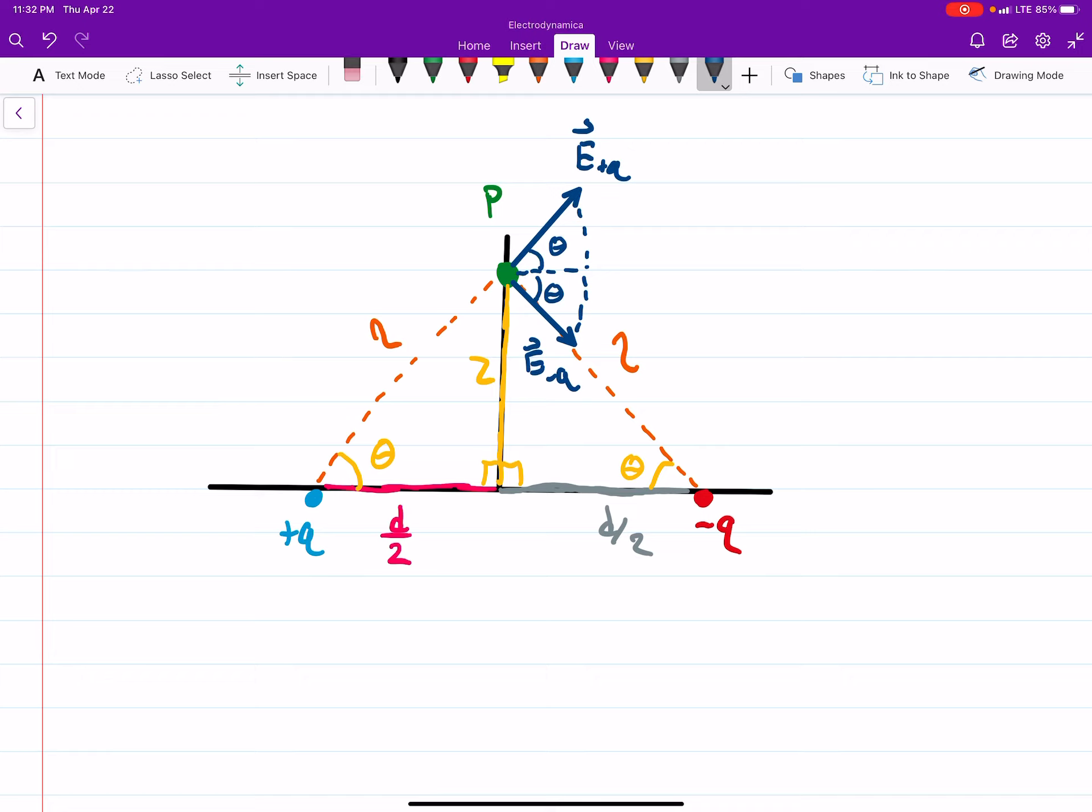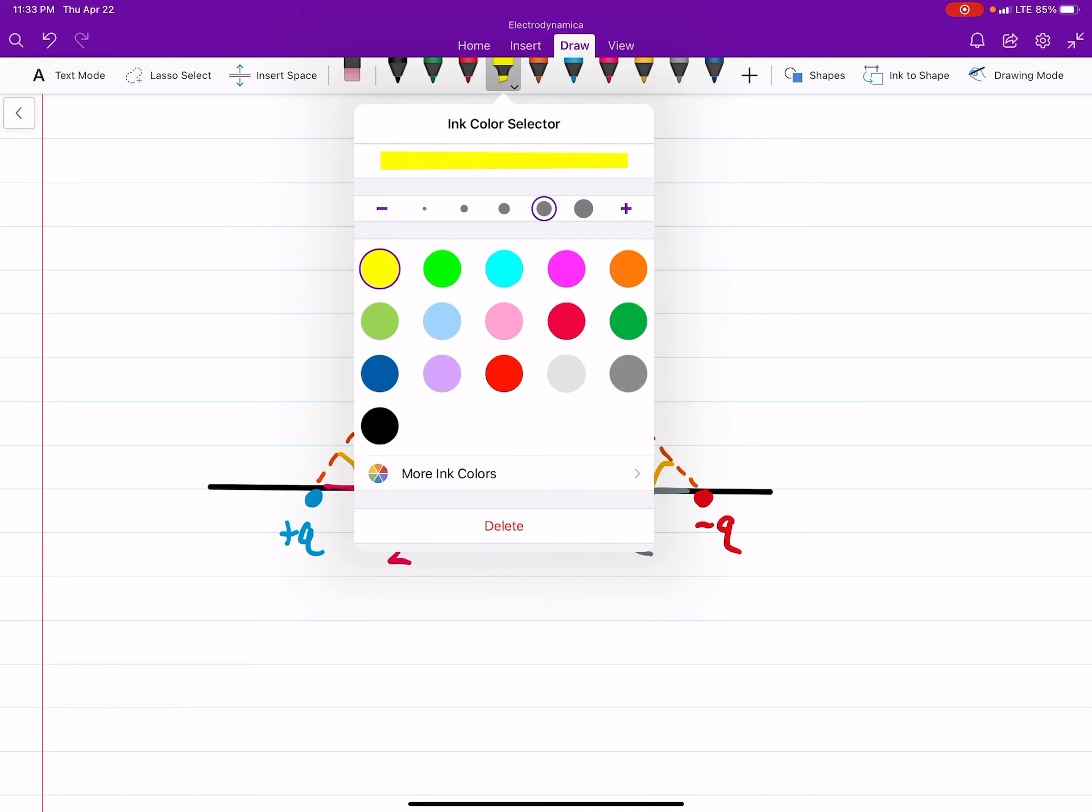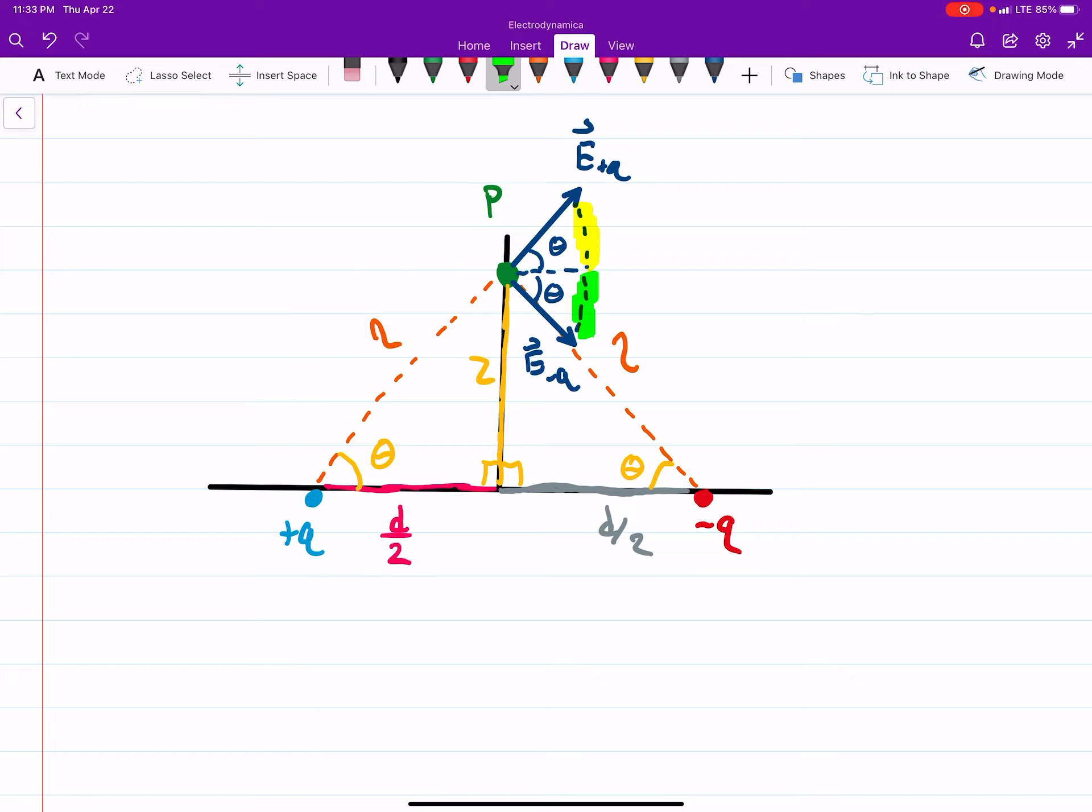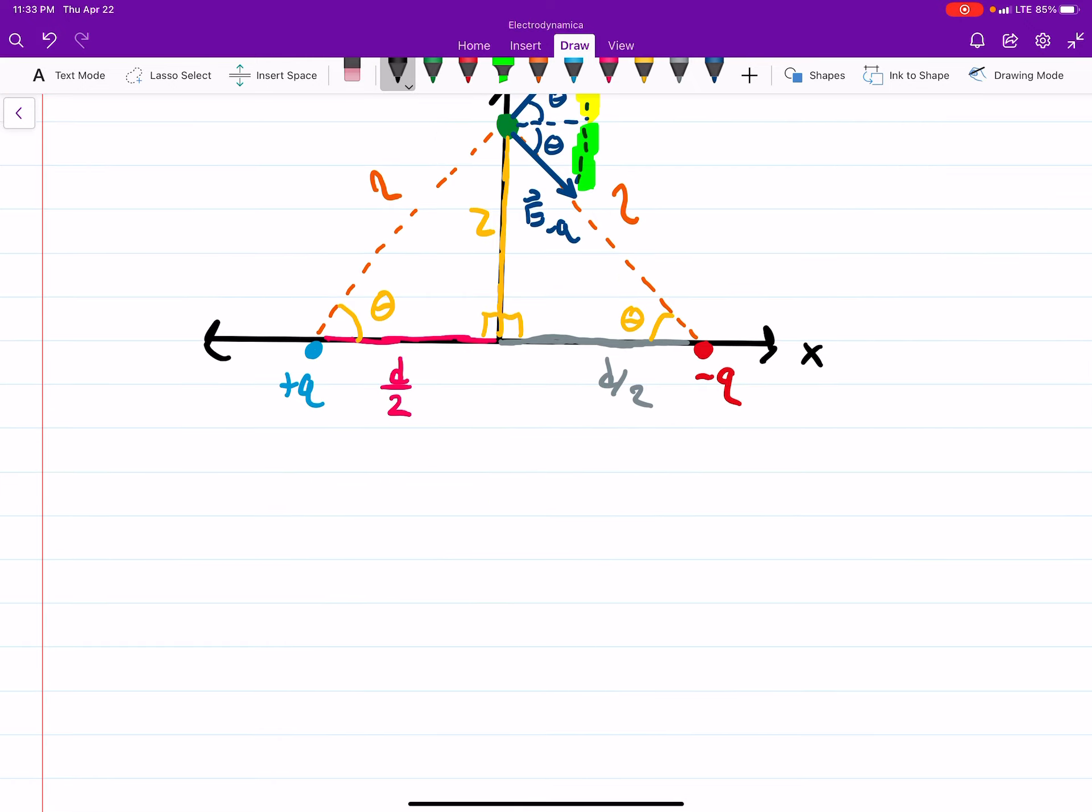So one thing we notice if we look at this is the y components are going to be equal and opposite. So this bit here will cancel with this bit here. So our net e field is only going to be in the x direction because this is our x axis. This is our z axis. So, I'm just going to make a note of that here. We'll say, only in x direction. And that's just by symmetry.